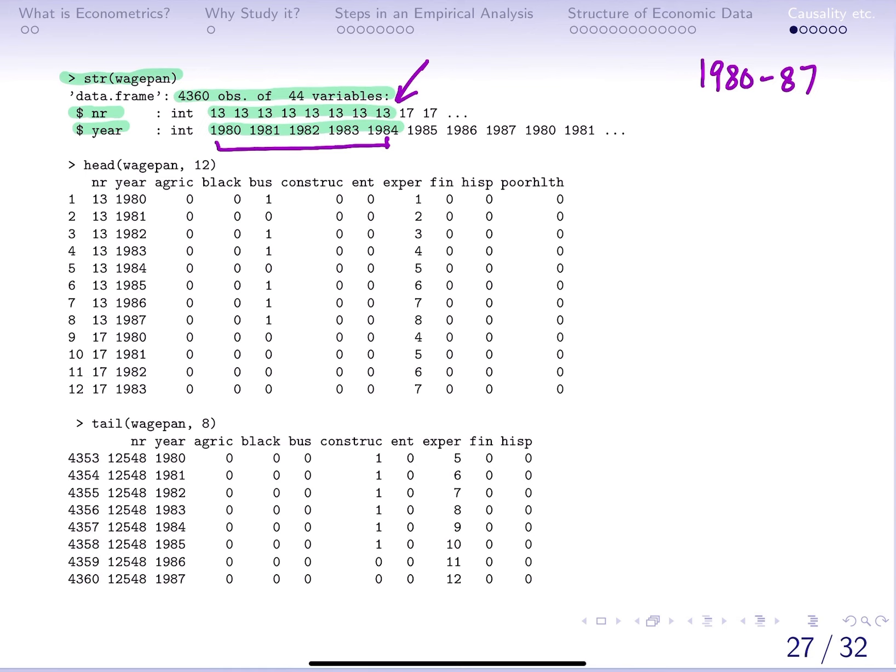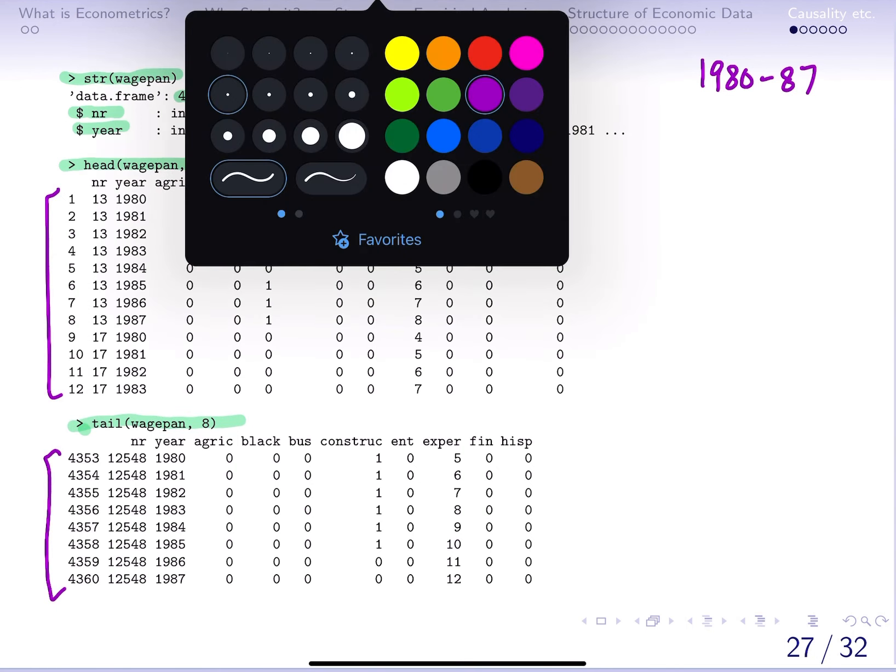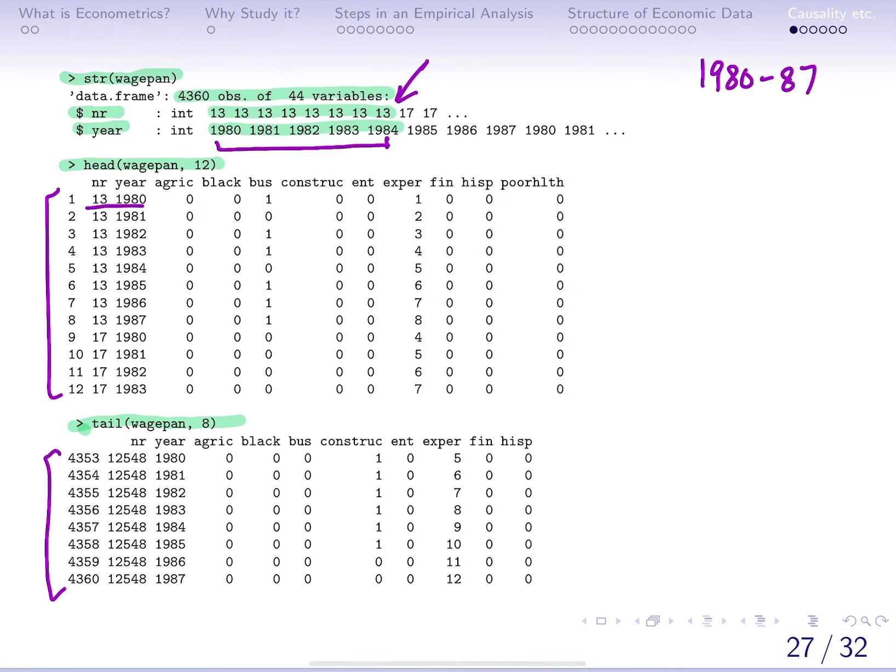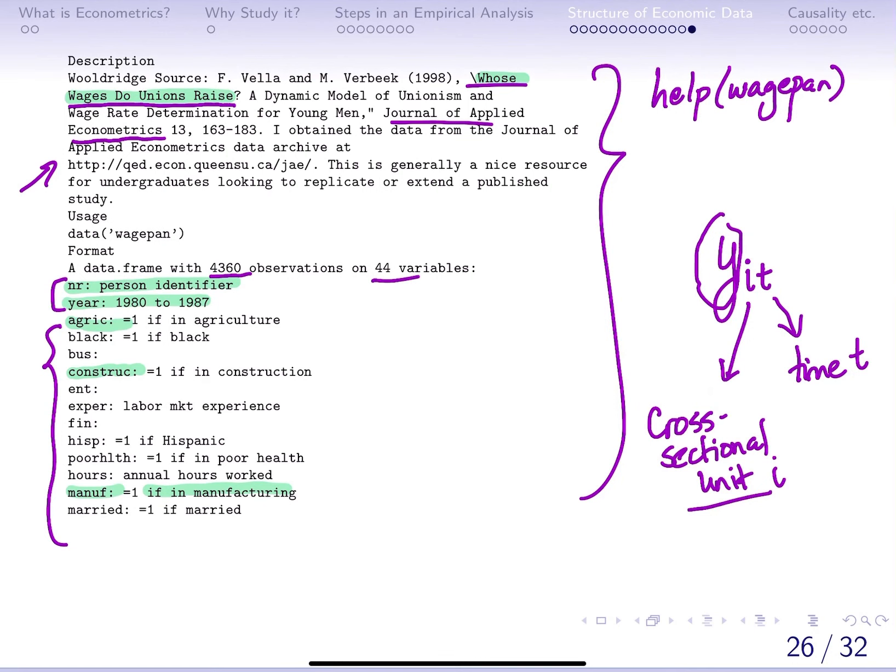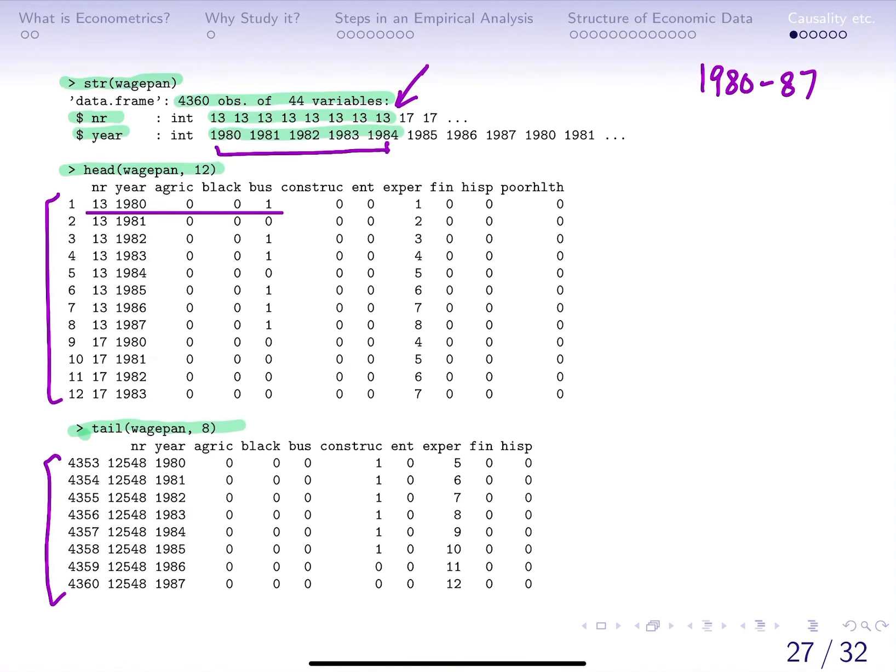If you wanted to look at more variables at once, you can look at the first 12 observations for all those variables, and here you can look at the last eight observations as well. Notice that for the first individual for 1980, this person is in the business sector, I'm assuming that's what it meant here. They have an experience of one year. There's obviously more information you can get because I've trimmed the data here to fit the slide, but you can try to write this in R.